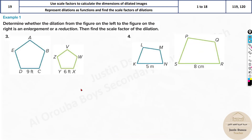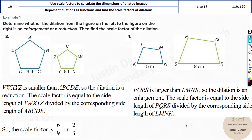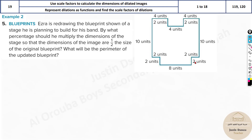Here we can also see them easily and tell: this is a reduction, this is an enlargement. This will be 6 by 9, that is about 2 thirds, and over here 8 by 5 is 1.6. So 2 thirds equals 0.666, which is less than 1, and 1.6 is more than 1.